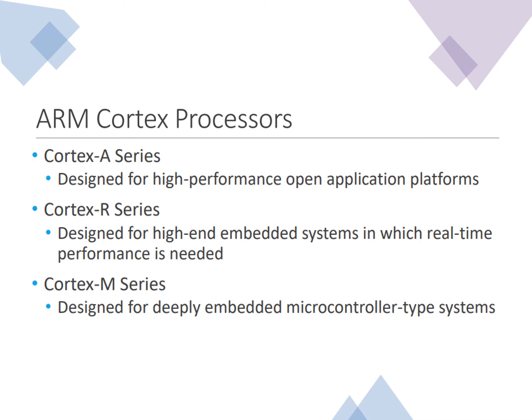The Cortex-A series is designed for high-performance open application platforms, such as banking or financial servers that work 24/7. The Cortex-R series is designed for high-end embedded systems requiring real-time performance — for example, missile systems or satellite systems operating under time-bounded conditions. The Cortex-M series is used for deeply embedded microcontroller-type systems, where many peripherals can be embedded along with the processor.